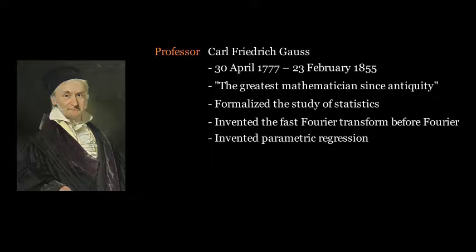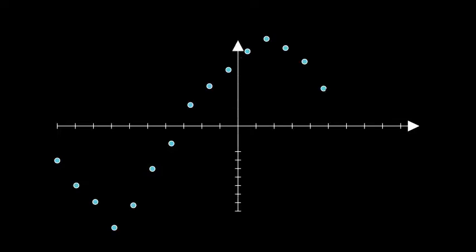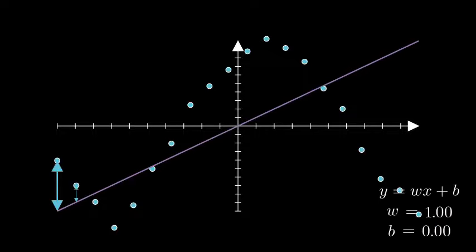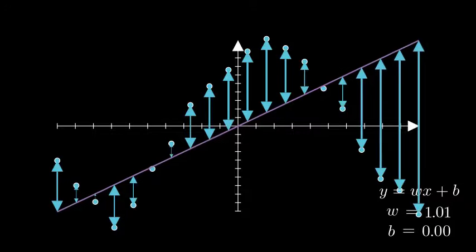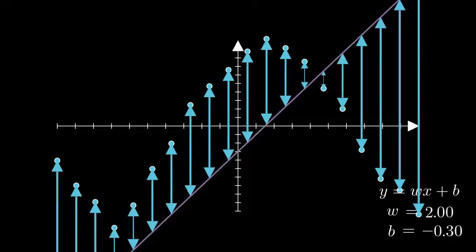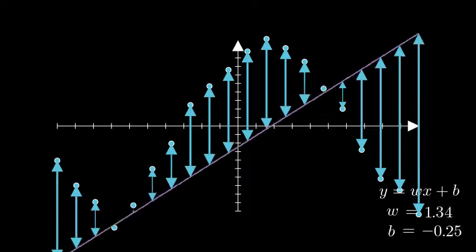But despite its simplicity, parametric regression has turned out to be one of the most useful mathematical ideas ever invented. To this day, it's still used all the time in economics, engineering, and the sciences. There's just one small problem with our method. It only works if the points actually lie along a straight line. If the data points happen to look like this, then it doesn't matter which line we choose, it's going to be a bad fit. And this is a huge problem, because most of the things that we would like to predict do not follow straight linear paths.